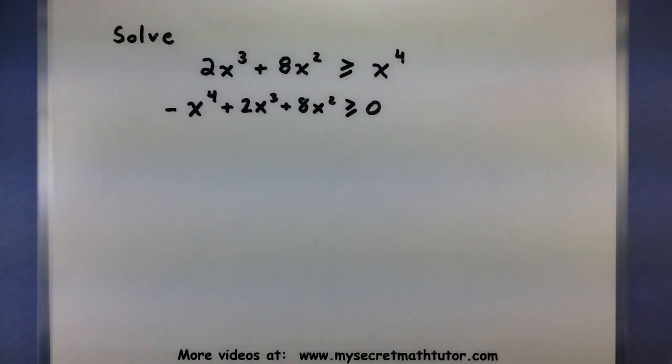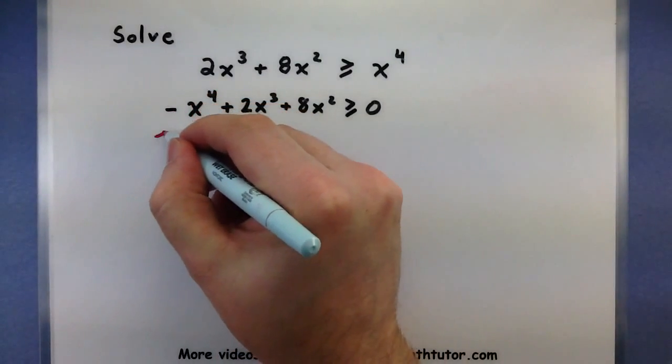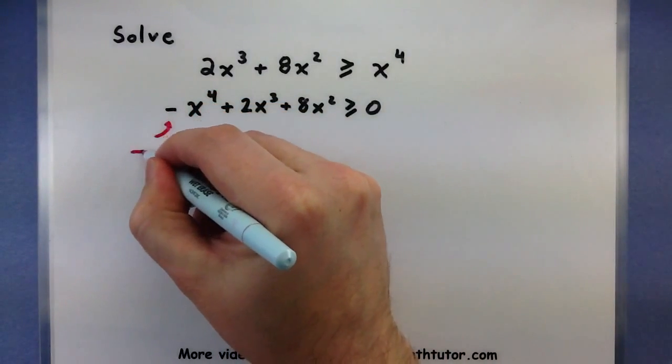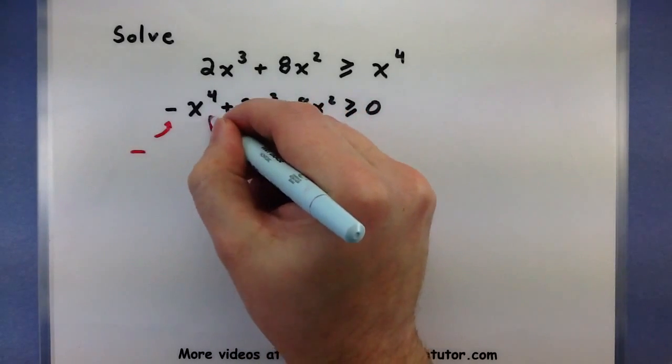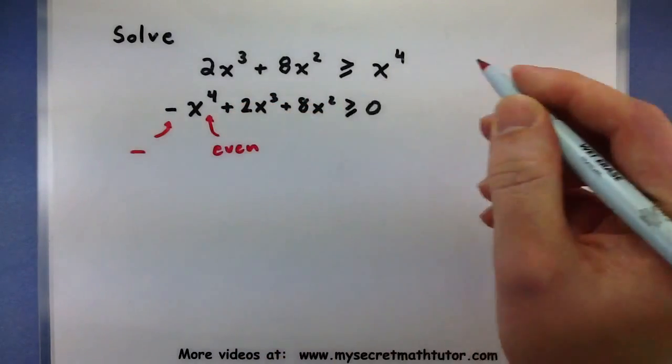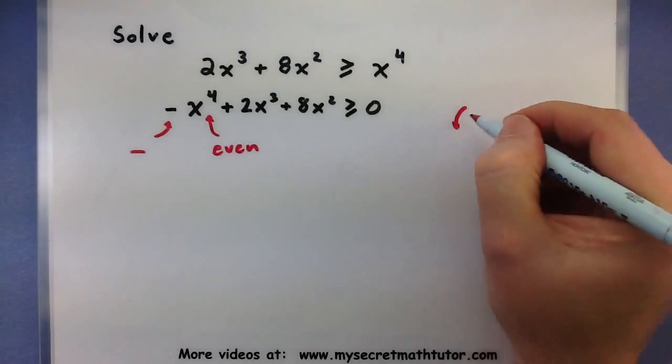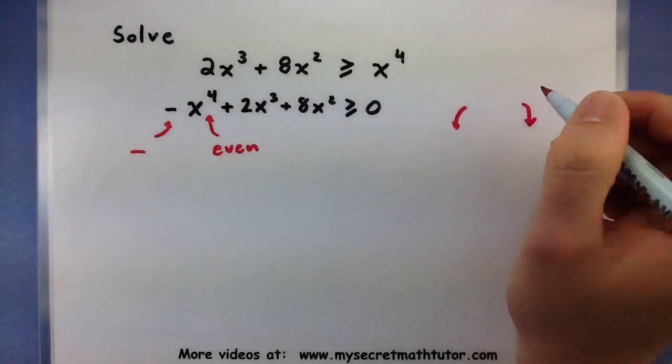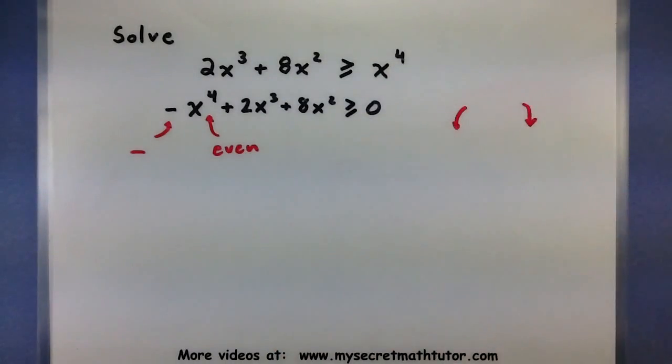Alright, looking at this, let's get our end behavior for our graph. So the leading term is negative and its power is even. What that means about my end behavior is that they're both facing in the same direction because it's even, but they're both facing down.